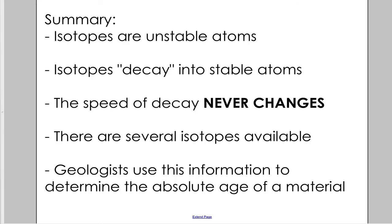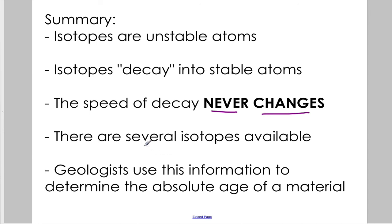To summarize the main ideas: isotopes are unstable atoms that decay into stable atoms, and the speed of decay never changes. There are several isotopes available, and geologists use this information to determine the absolute age of a material. They compare the ratio of the original isotope with the decay product to determine the number of half-lives, and from the number of half-lives they can determine the number of years.